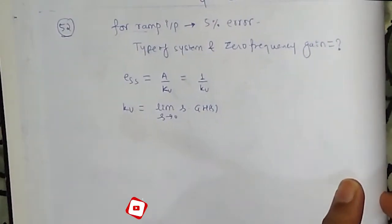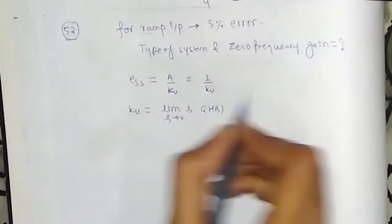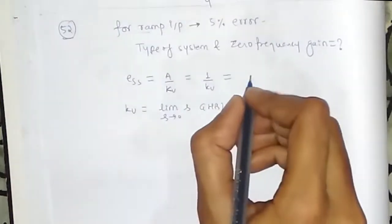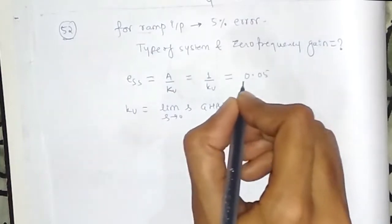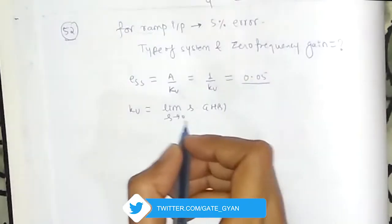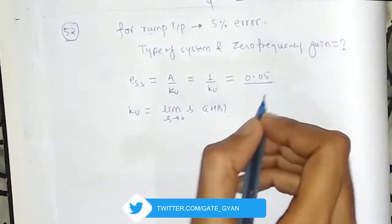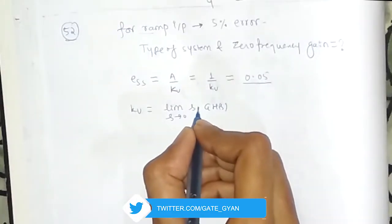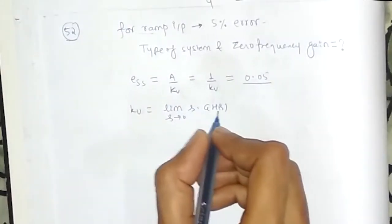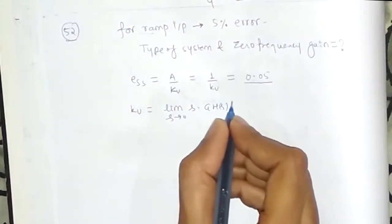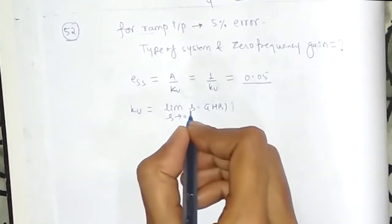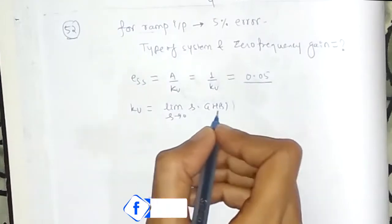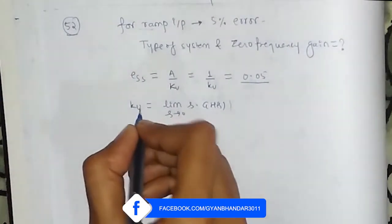So from here since ESS we are getting is finite, that is going to be 0.05 as given. So we will get this ESS finite only when this S will be cancelled by a term 1 by S which will cancel this S and will make this Kv finite.